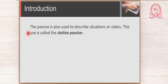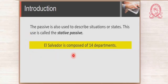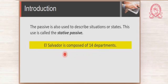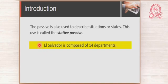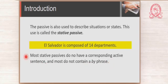This is another use of the passive, so pay attention to this. 'El Salvador is composed of 14 departments.' In this case, you are describing El Salvador and saying that it has 14 departments. You use the passive to describe, but who divided El Salvador into 14 departments? We don't know, and it is not important. When you just want to describe something, you use the stative passive. In most cases, you don't have the agent at the end, and most stative passives do not have a corresponding active sentence, and most do not contain a 'by' phrase.